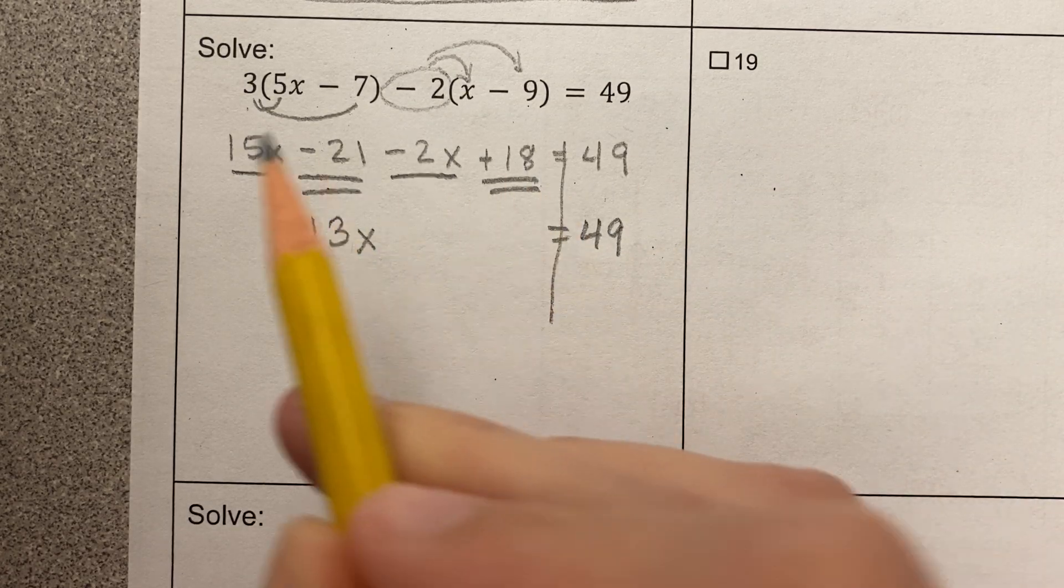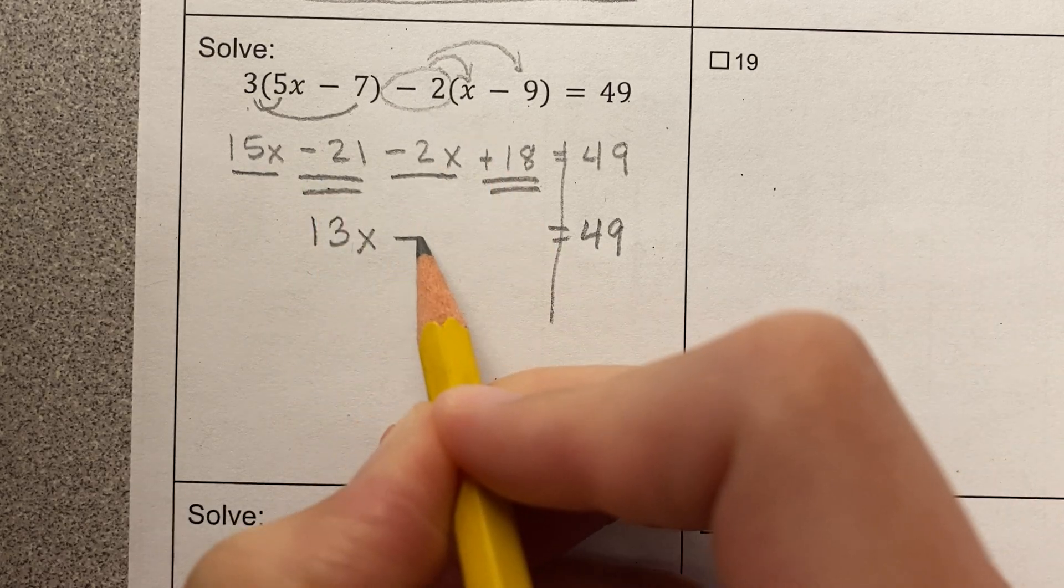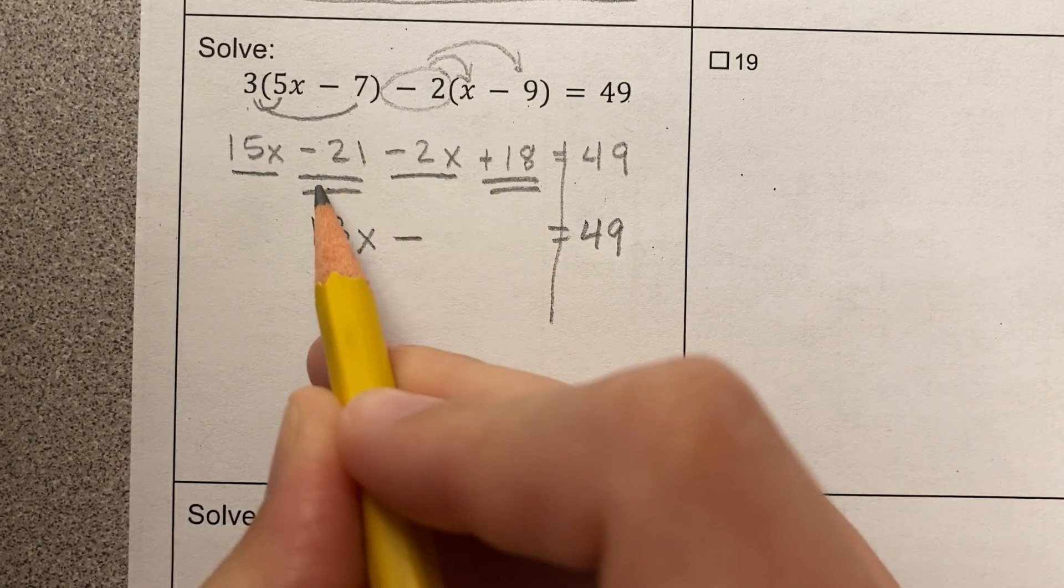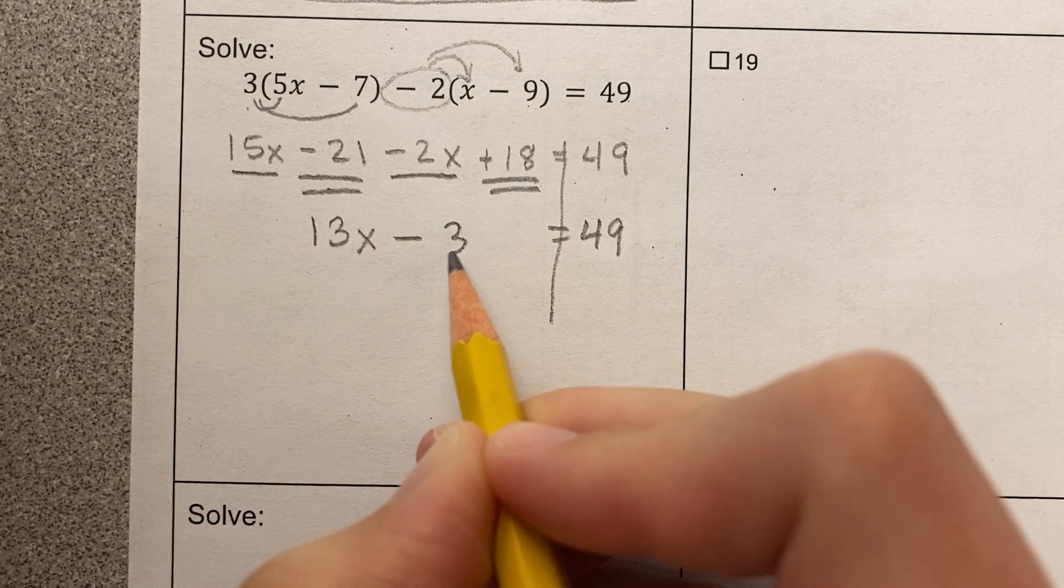Negative 21 plus 18, I have more negatives than positives, and I'm subtracting because they're different signs. So 21 minus 18 is 3.